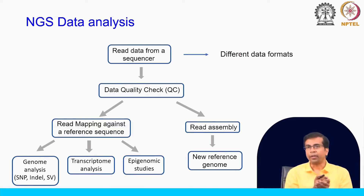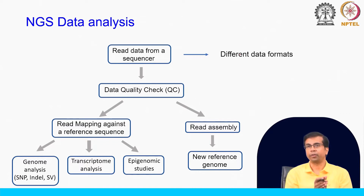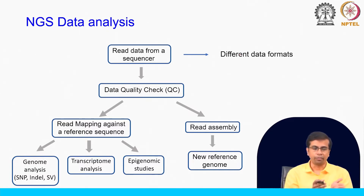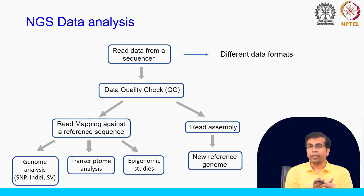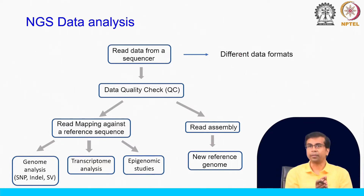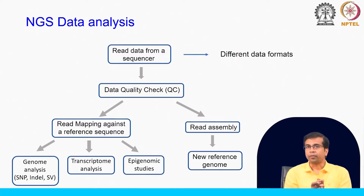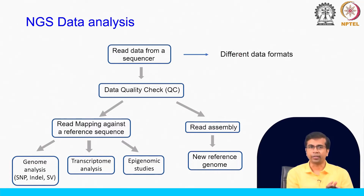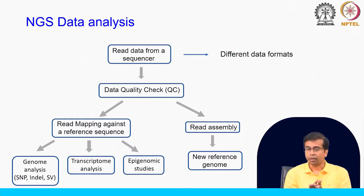Once you have done read mapping, it is required for many different types of analysis. For example, if you are interested in genome analysis, looking for genetic variations or structural variations, single nucleotide polymorphisms, you do genome analysis with read mapping as the first requirement. You can also measure expression levels of mRNAs or genes through transcriptome analysis. And for epigenomic studies, you also need read mapping. We will have dedicated sections on each of these.